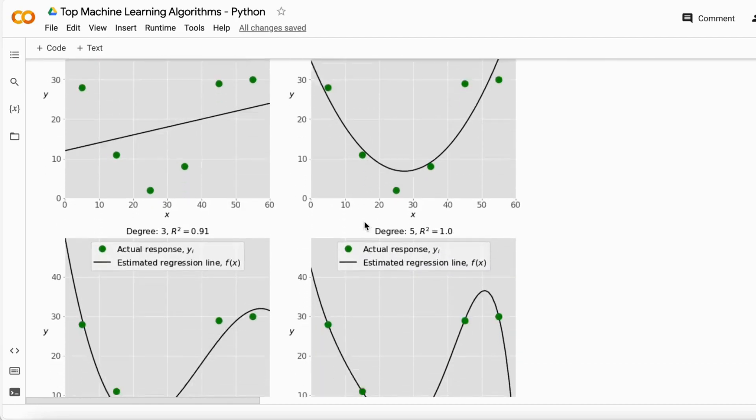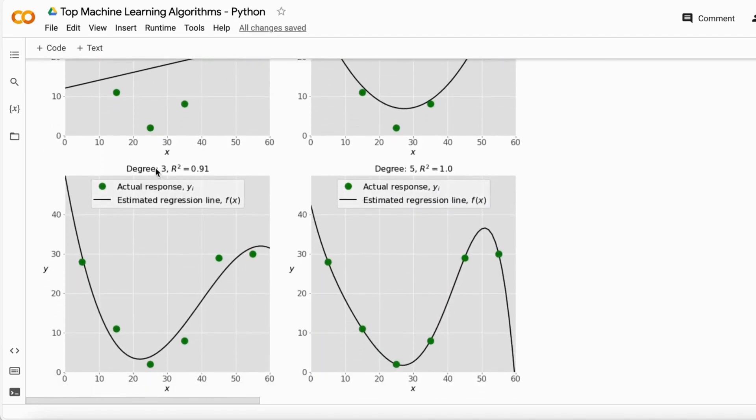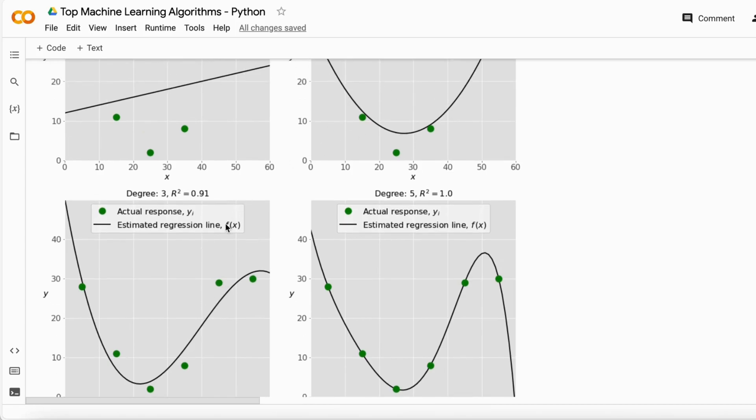When you increase the degree a little more, it will increase the accuracy a little bit as well and it tries to capture more of the fluctuations in your data. These two conditions are like very sweet spot conditions because your model is not overfitted or underfitted.